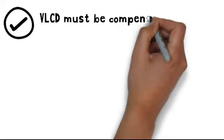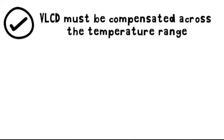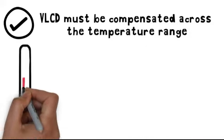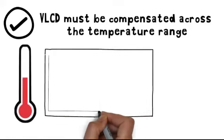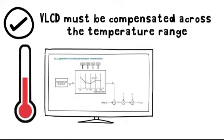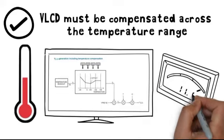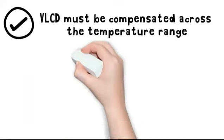VLCD must be compensated across the temperature range to allow a high stable contrast across the temperature range. Since the display characteristics change over temperature, LCD voltage should also change to maintain the best contrast over temperature.